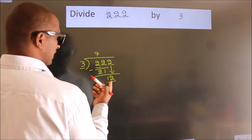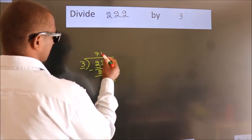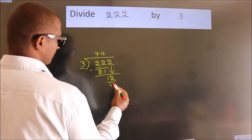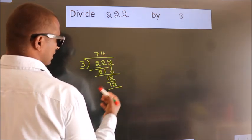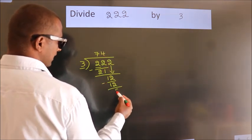Where do we get 12? In the 3 table, 3 times 4 is 12. Now we subtract. We get 0.